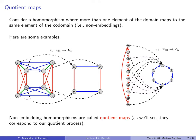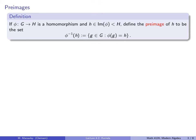Non-embedding homomorphisms are called quotient maps, and we'll see shortly how they correspond to our quotient process. You can get a glimpse of this right here: if you put big nodes around these pairs of nodes, you can see how collapsing these supernodes will leave you with a diagram that looks like that one. So that's a preview of what's to come.